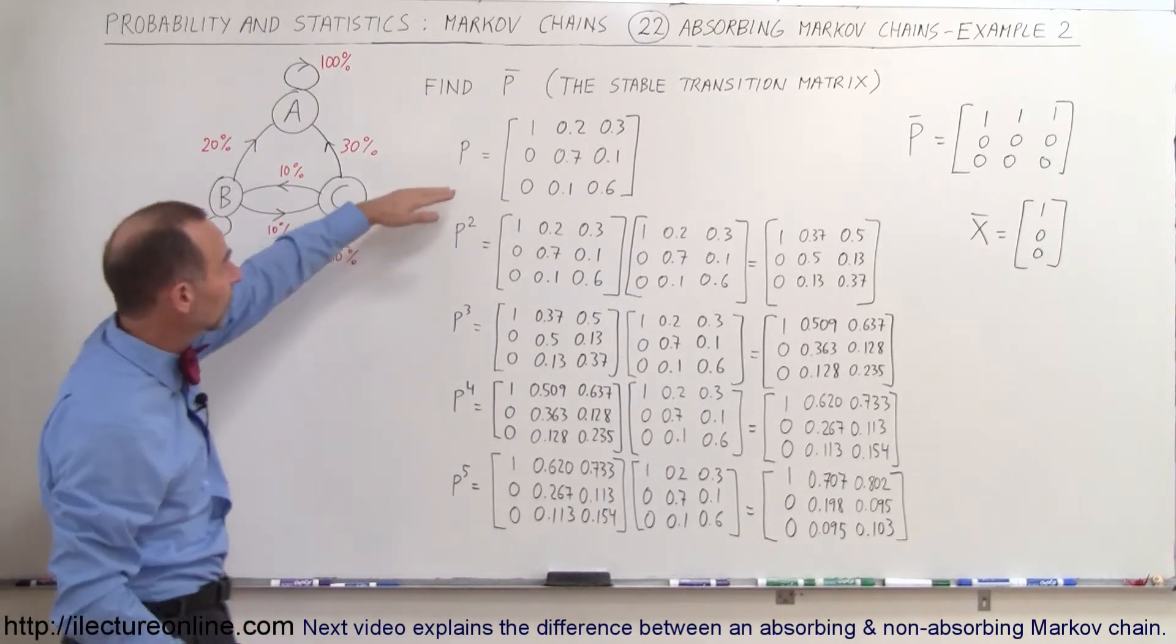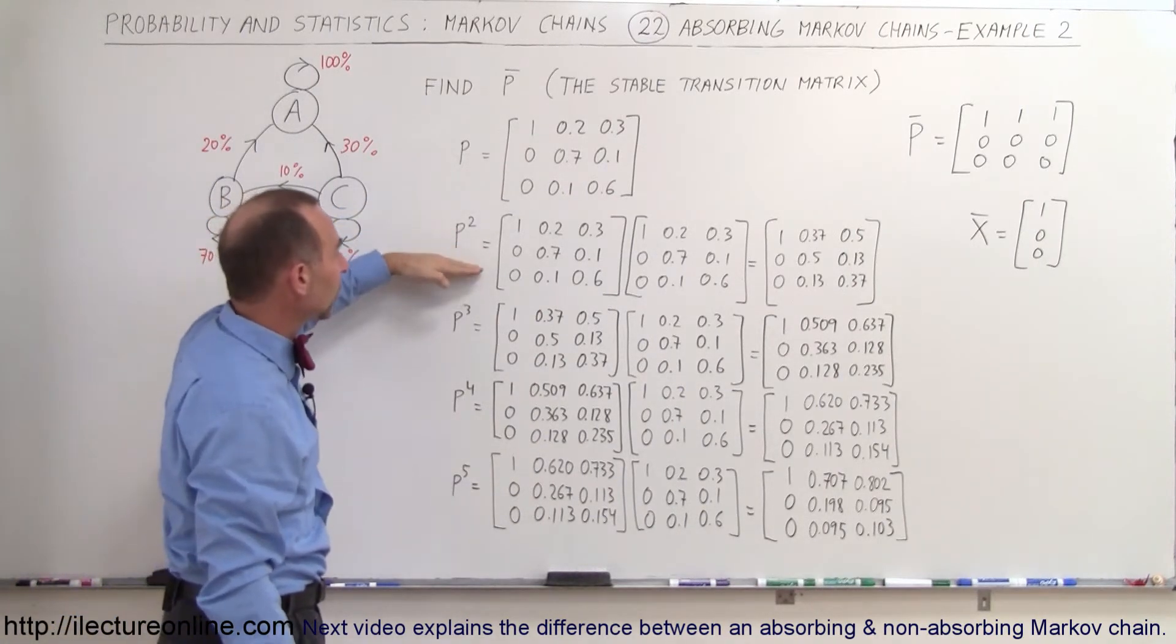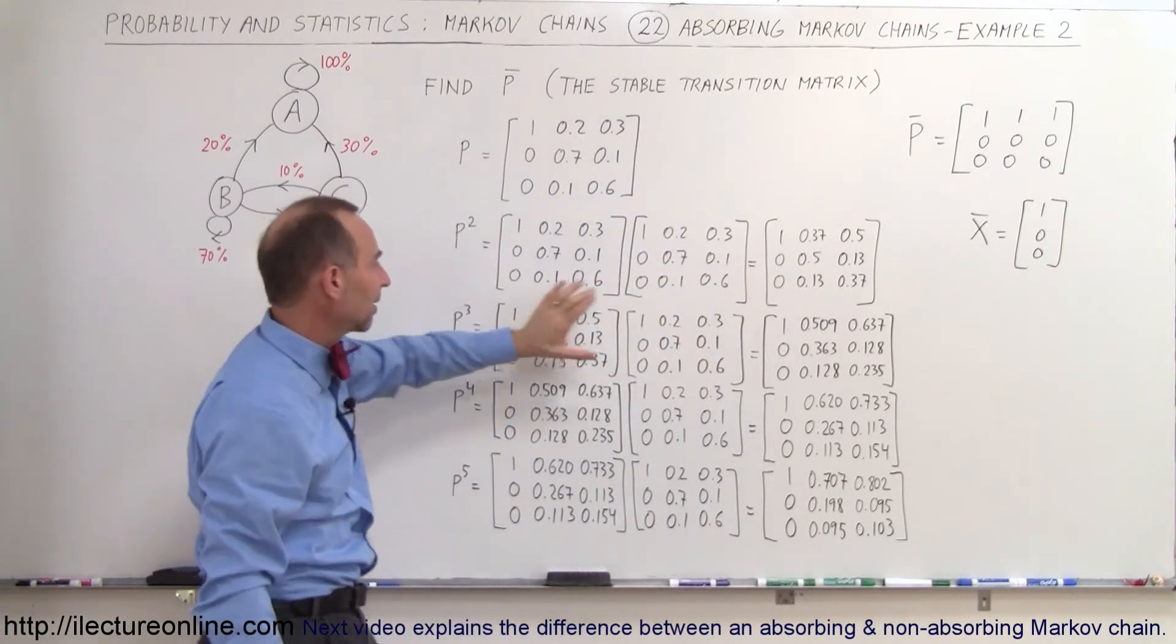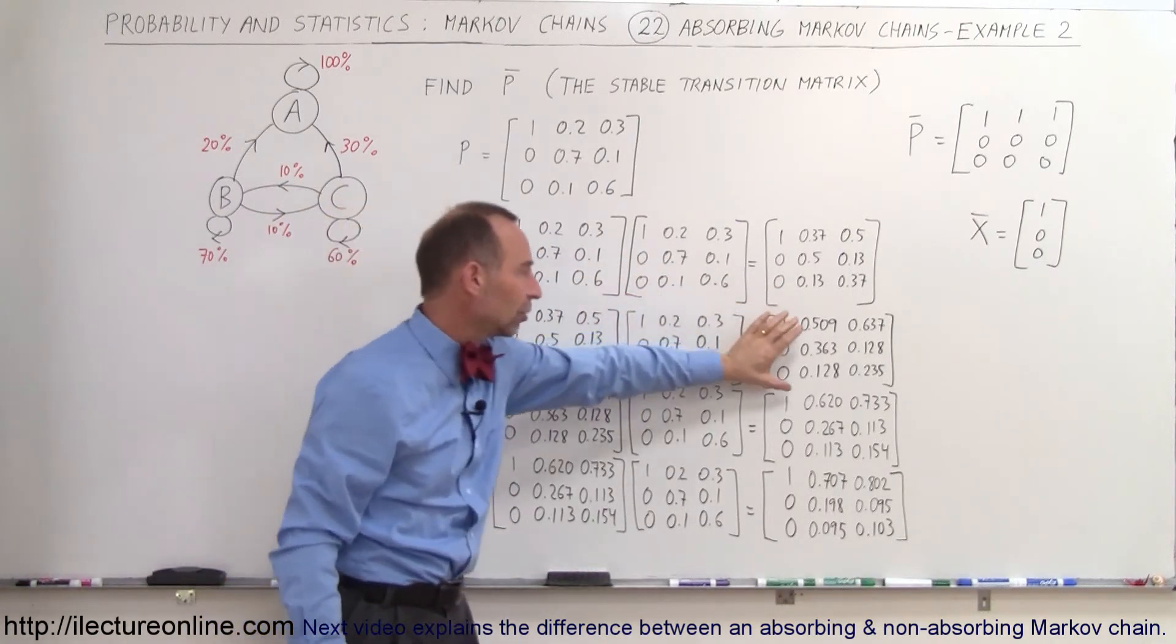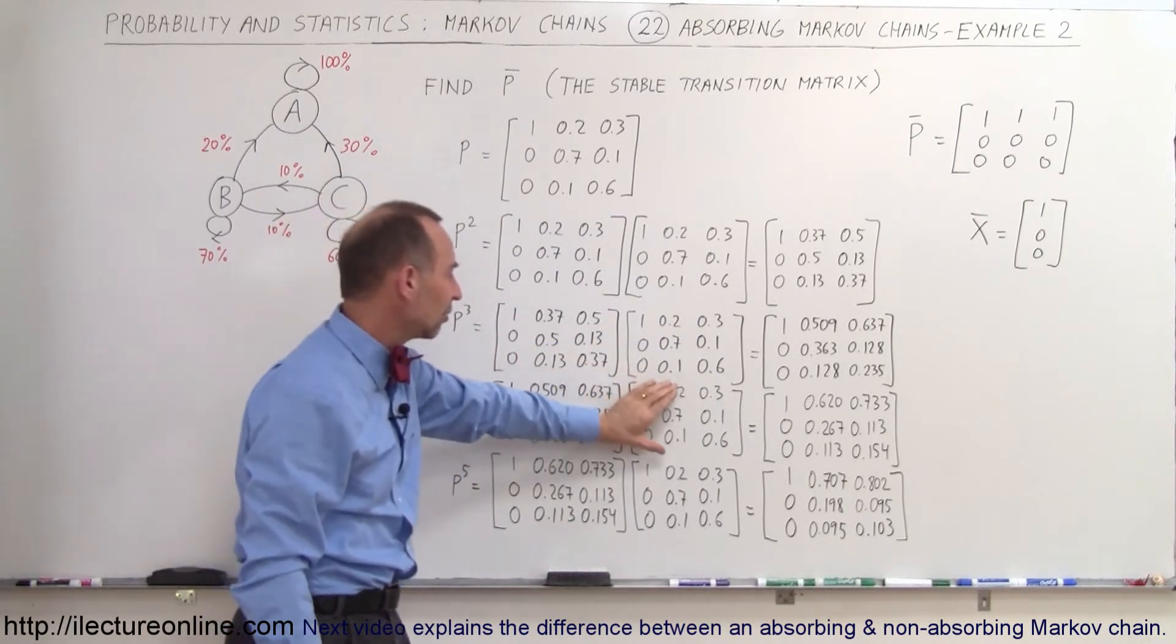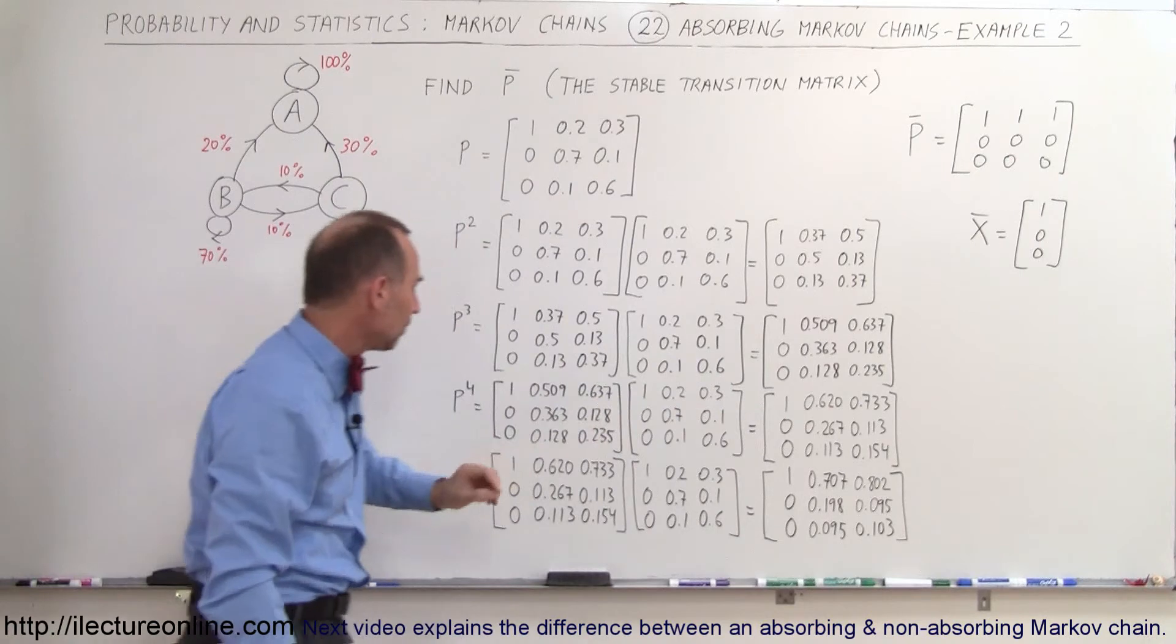So what we're going to do here is we're going to take our initial transition matrix and multiply it by itself to get a new matrix, then take that and multiply times the original transition matrix to get the new matrix P cubed. We take that result, multiply times the transition matrix to get P to the fourth...